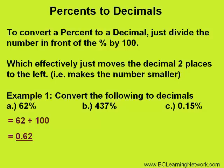Let's do the same thing with 437%. Take 437, divide it by 100, move our decimal two places to the left, which gives us an answer of 4.37.